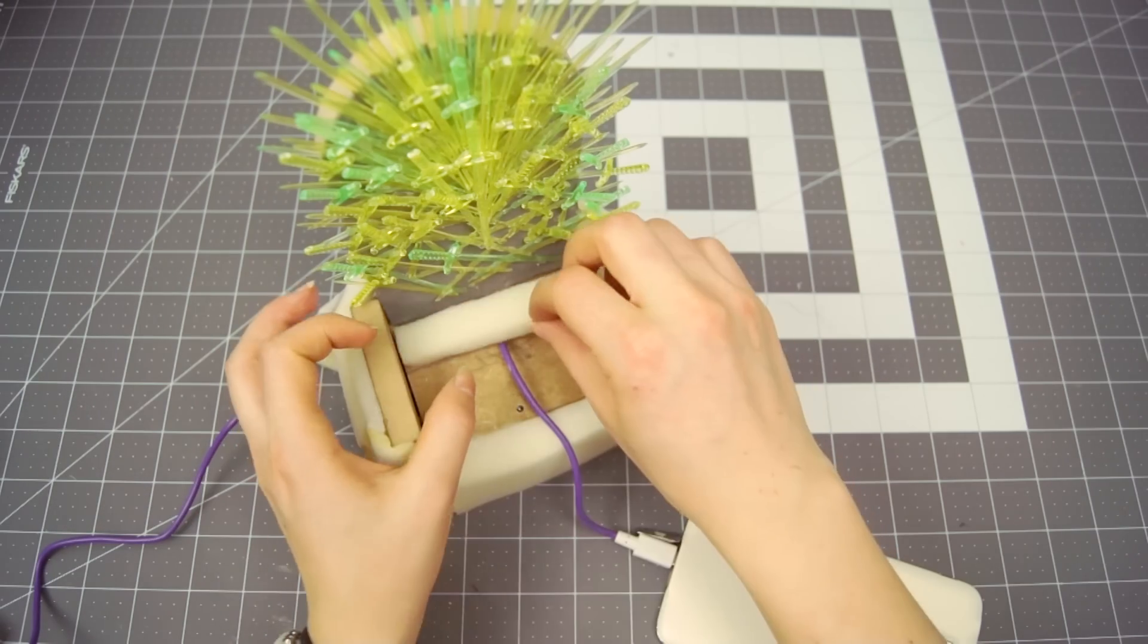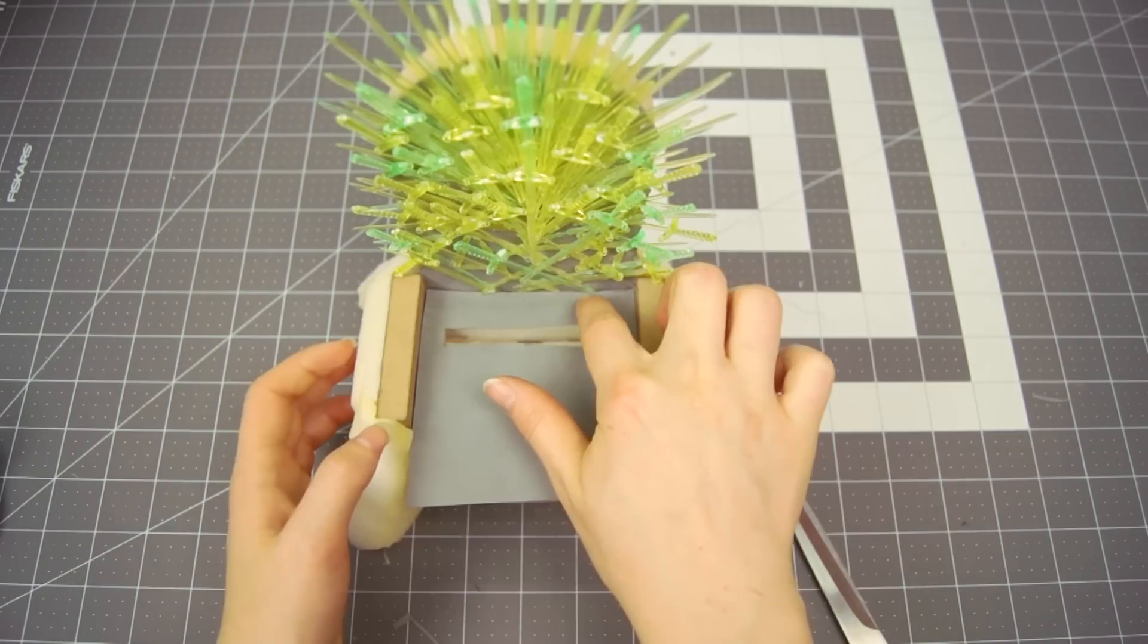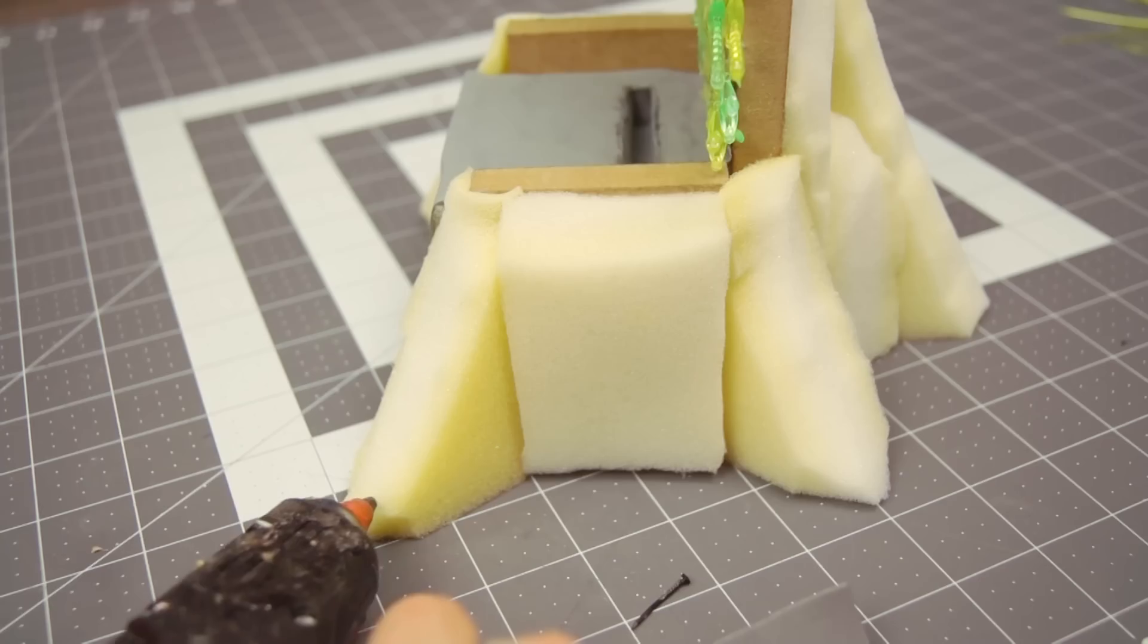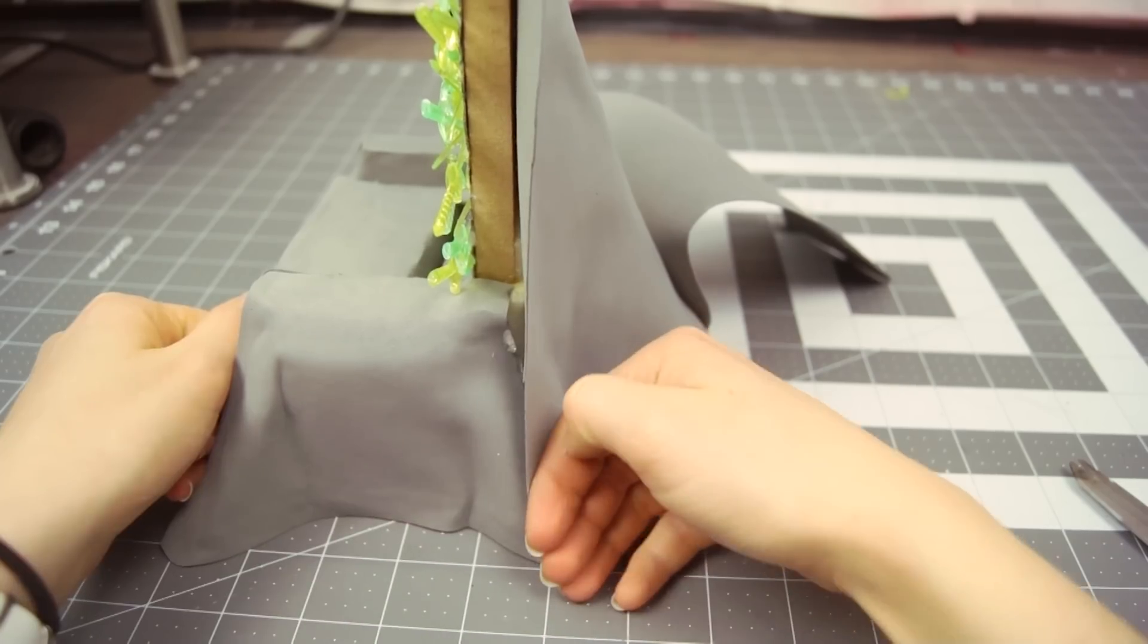As I had the position of the phone on the charger I could build up with foam around it, covering that up with the thin grey foam too. Before I continued I made sure to cover up all the other surfaces as well.